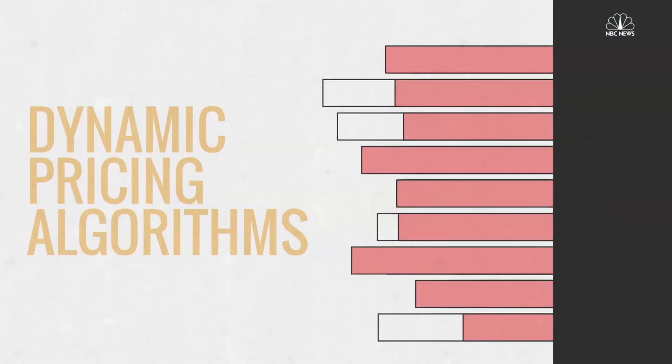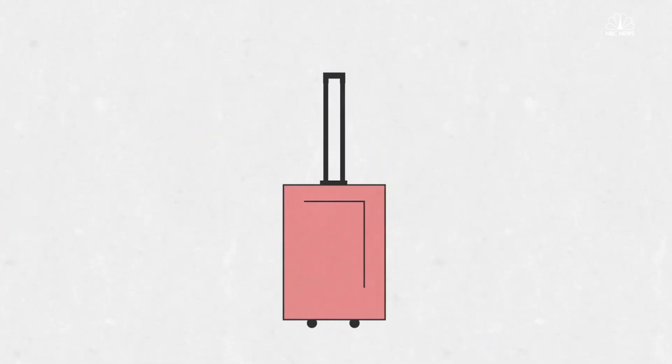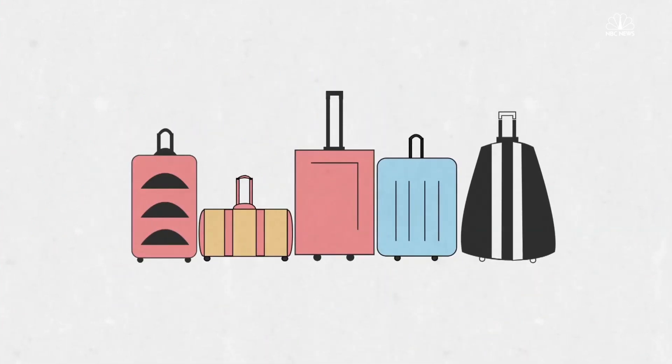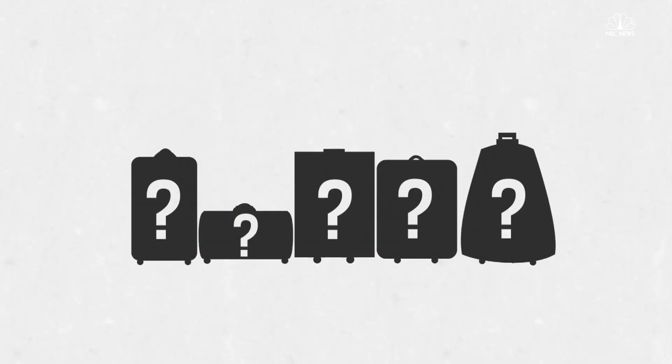Airlines use dynamic pricing algorithms to set ticket prices, and price fluctuations as high as 50% can be common. Each airline uses different proprietary algorithms to set pricing variations, and they usually keep the details secret.